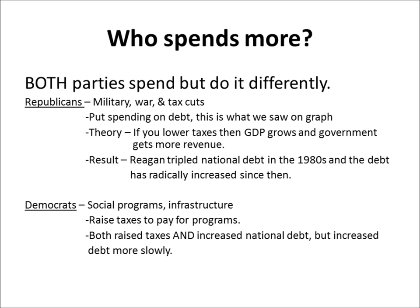Democrats like to raise taxes rather than borrow as much. They raise taxes and they borrow, which means the increase in the debt is more slow under Democrats because they're not borrowing quite as much at a time.